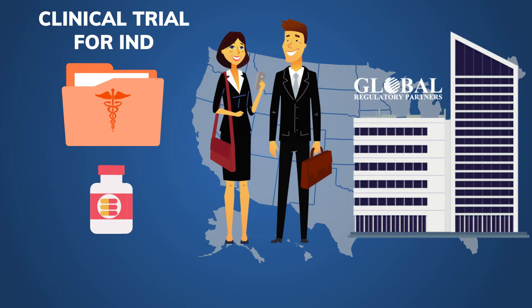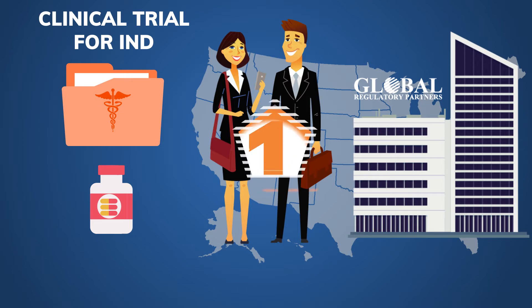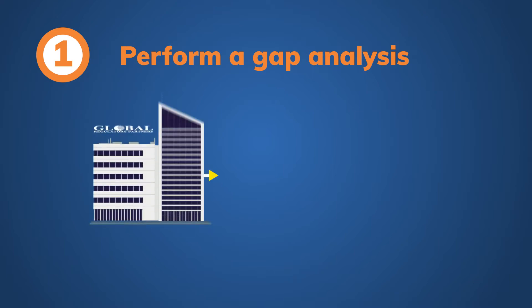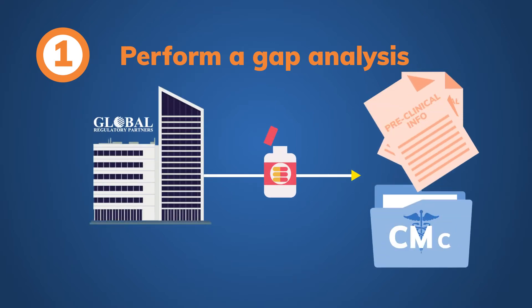For your IND, Global Regulatory Partners can perform the following activities for you. Step 1: Perform a gap analysis. The GRP team will assess the available preclinical and CMC information that you have collected for your new drug or biologic in order to assess if it's enough for IND application.